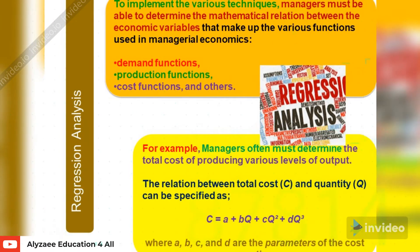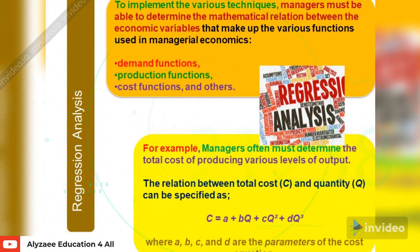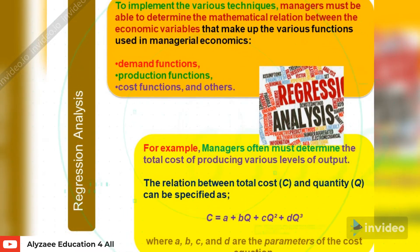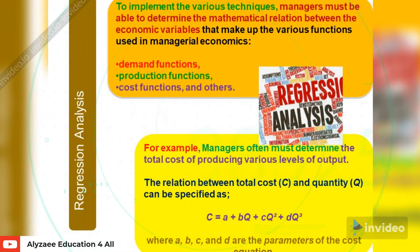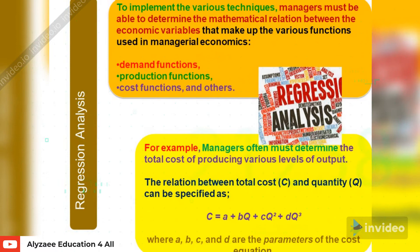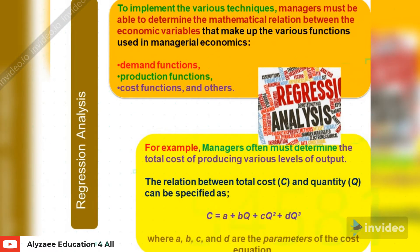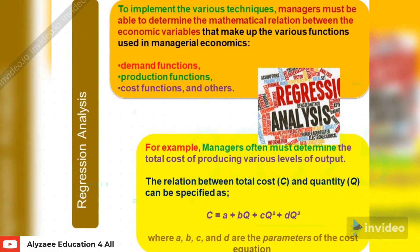The relation between total cost (C) and quantity (Q) can be specified with the following formula: C = a + bQ + cQ² + dQ³, where a, b, c, and d are the parameters of the cost equation.